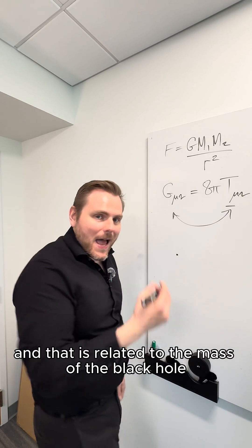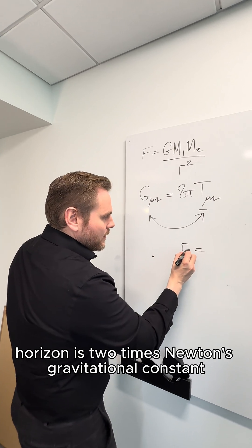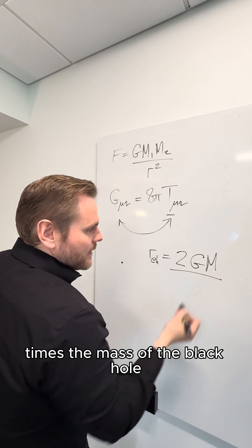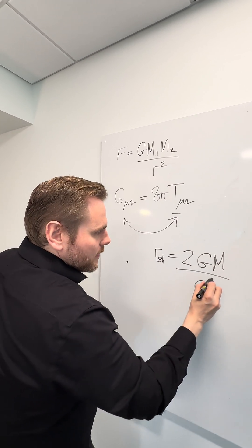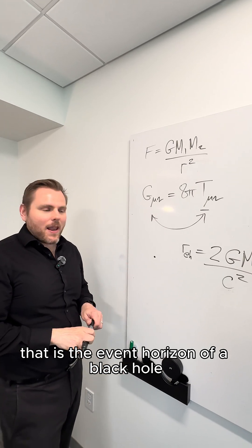And that is related to the mass of the black hole in such a way that the event horizon is two times Newton's gravitational constant times the mass of the black hole divided by c squared. That is the event horizon of a black hole.